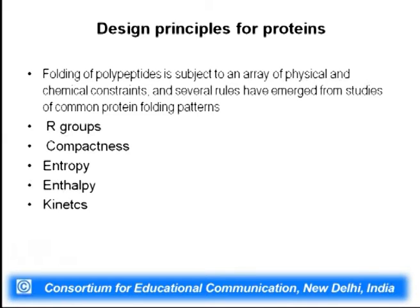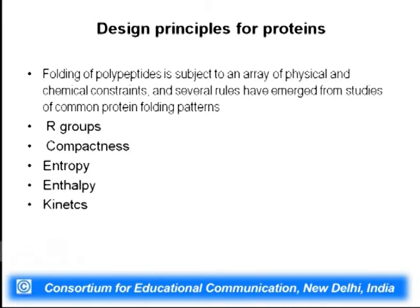The cytosol is a crowded environment and that results in molecules undergoing a compact structure. Key design principles important for protein folding include: R groups, which are very important chemical entities directing how proteins fold and what interactions occur; attaining compactness; and enthalpy, entropy, and kinetics. When talking about protein folding per se, it is a process that is kinetically as well as thermodynamically justifiable.